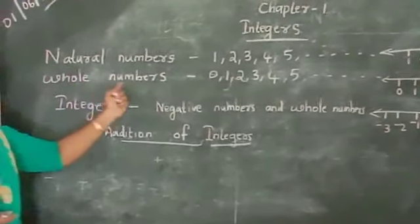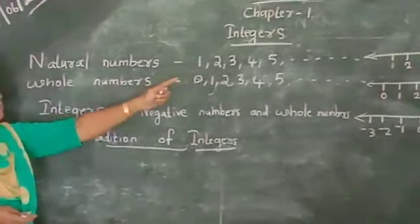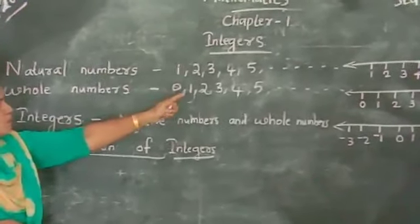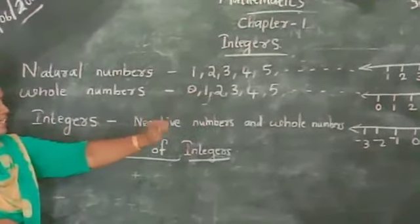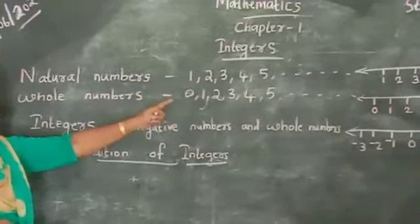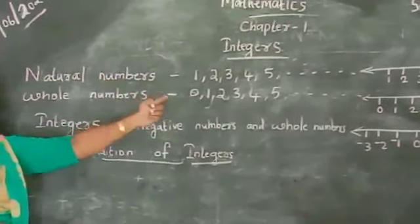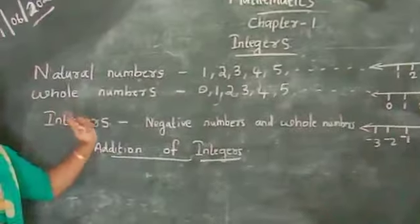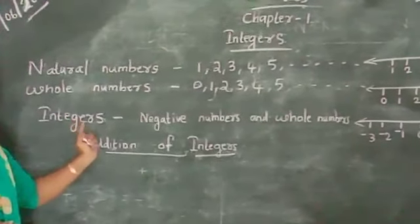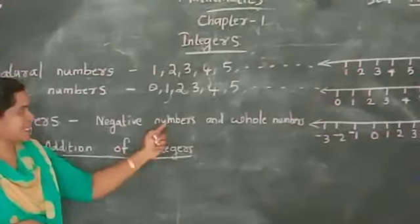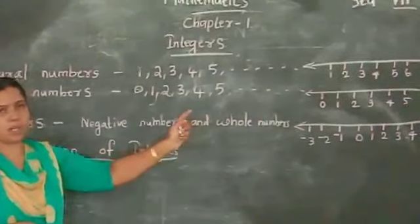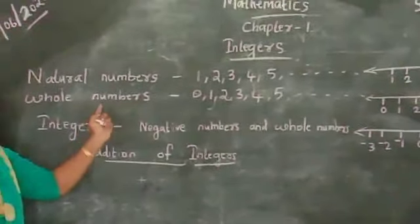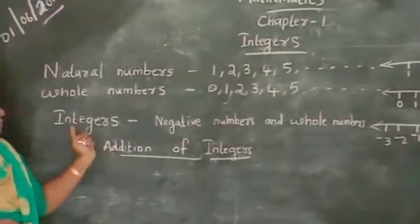Next, whole numbers. Whole numbers are starting from 0, 1, 2, 3, 4, 5, etc. That is, 0 and natural numbers together are called whole numbers. Next, integers. Integers are negative numbers and whole numbers together. When negative numbers are included with whole numbers, it becomes integers.